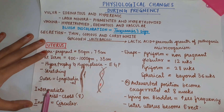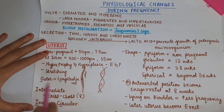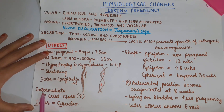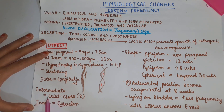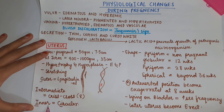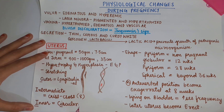The uterus is divided into three layers: outer, intermediate, and inner. The outer layer is longitudinal. The inner layer is criss-cross. The intermediate layer is present in criss-cross fashion in the form of eight. The inner layer has circular muscles.